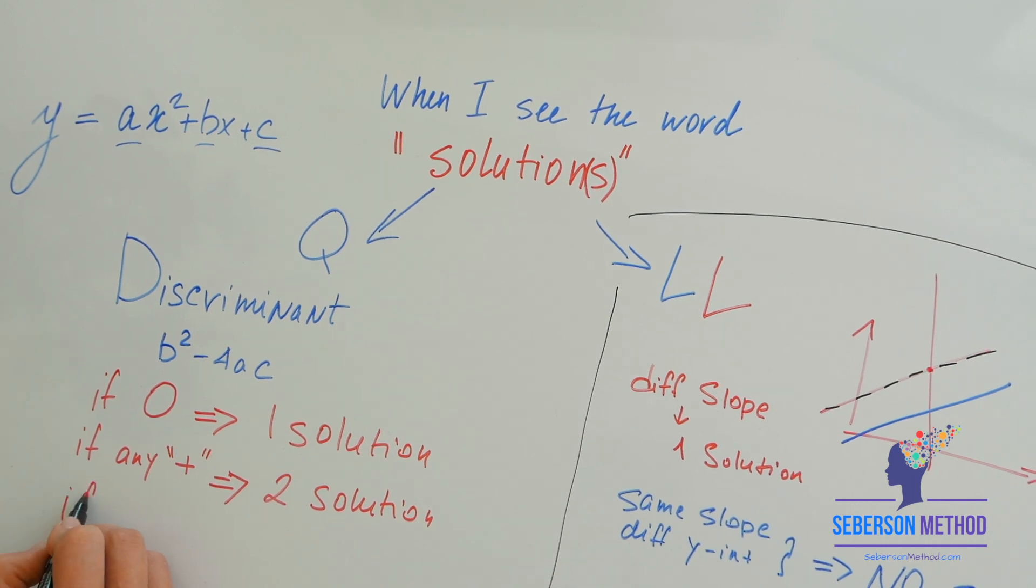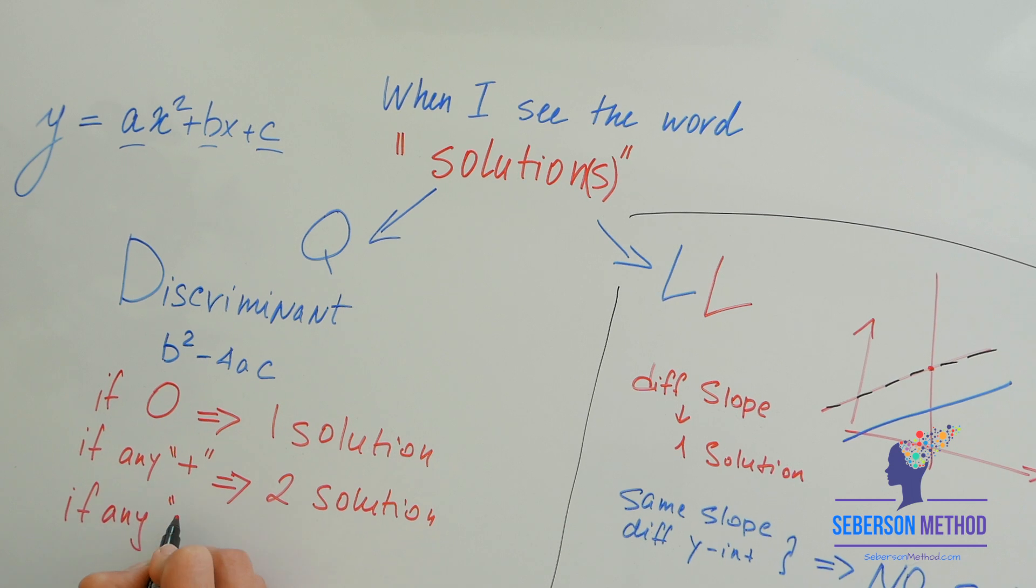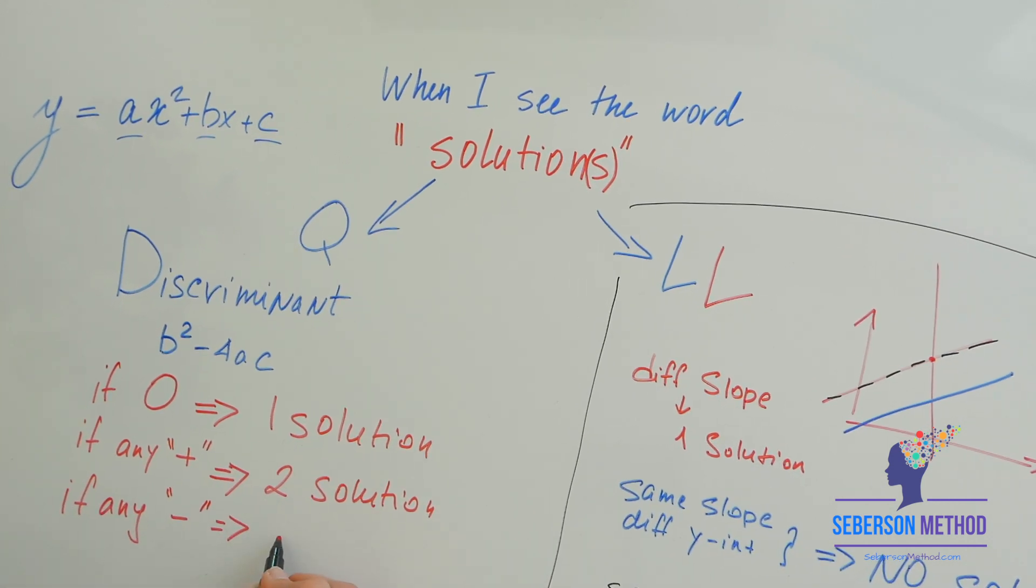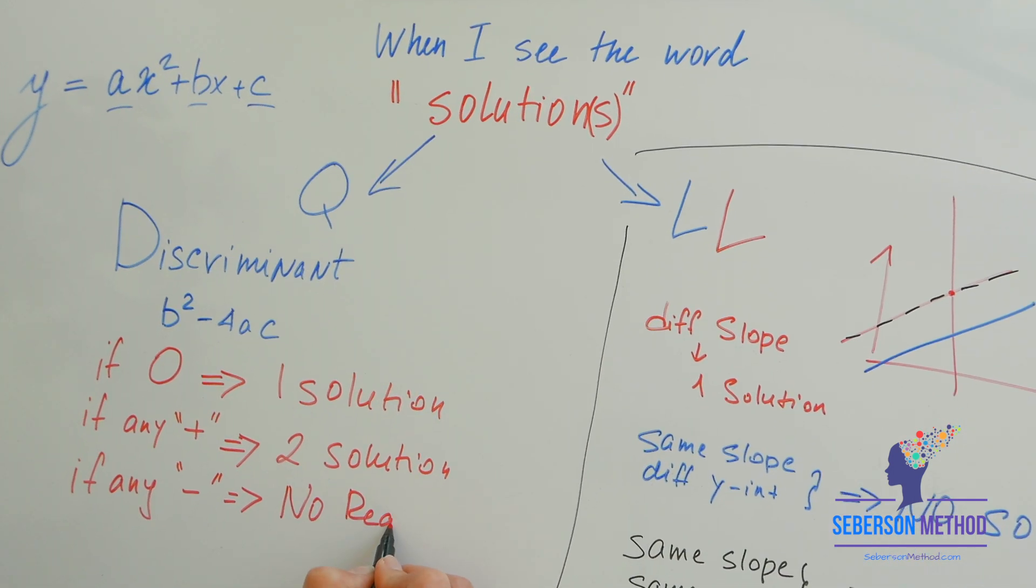If your discriminant is any negative number, you're going to have no real solutions.